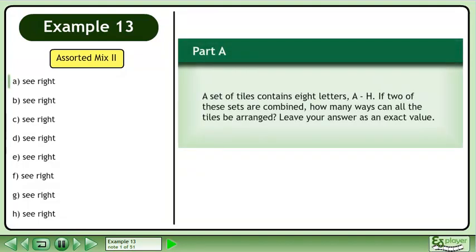A set of tiles contains eight letters, from A to H. If two of these sets are combined, how many ways can all the tiles be arranged? Leave your answer as an exact value.